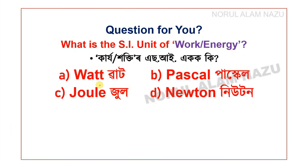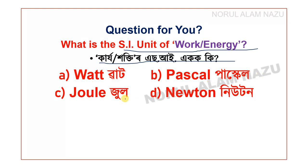Question 12: What is the SI unit of work and energy? The options are Watt, Pascal, Joule, and Newton. The answer is Joule.